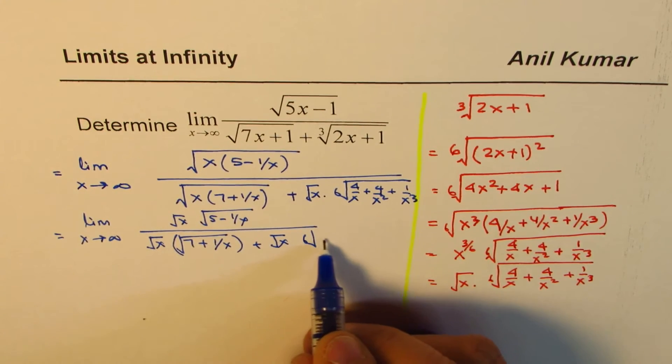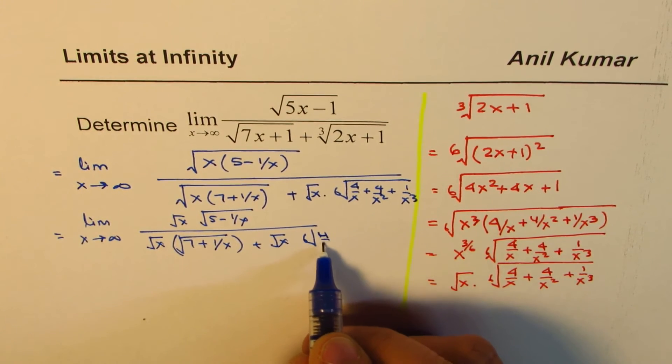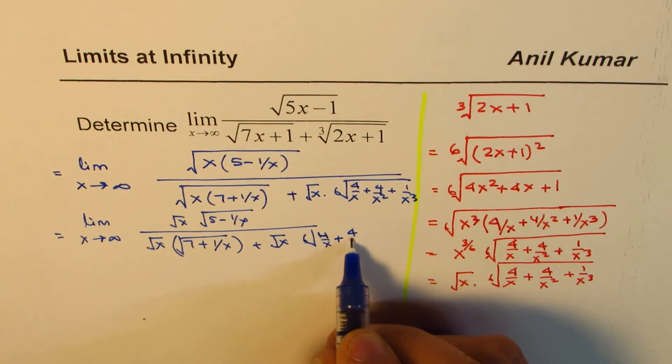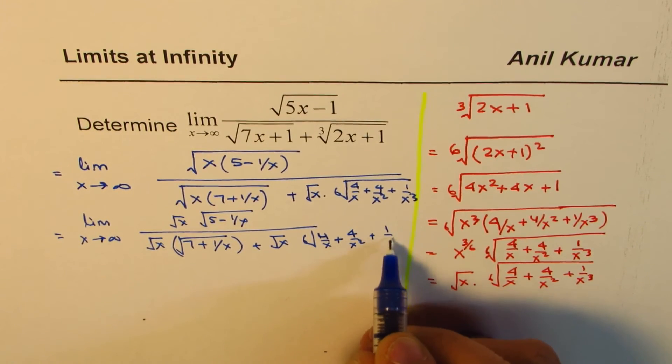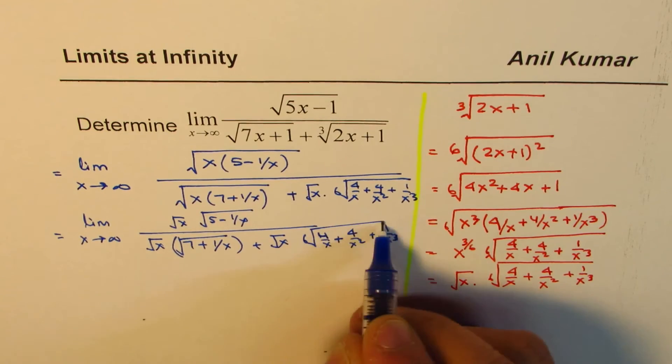And here we have again square root x common. And we have sixth root of 4 over x plus 4 over x square plus 1 over x cube. Perfect.